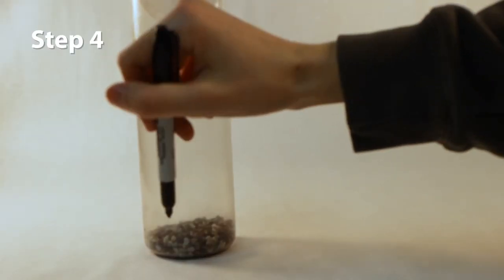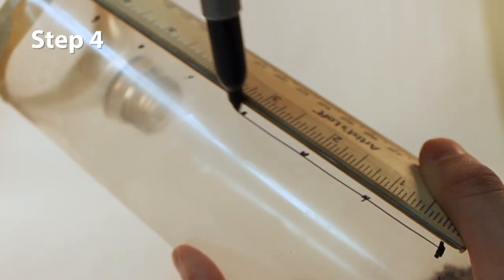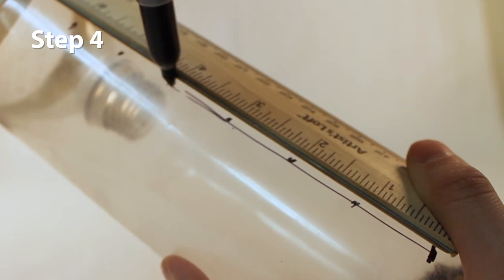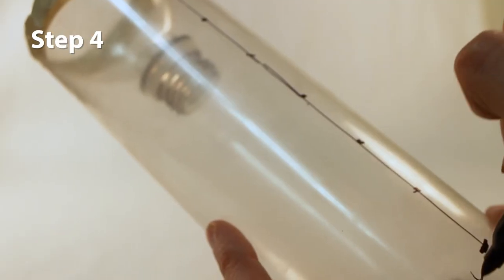Step 4: Draw a zero line using a marker and ruler and mark each inch or quarter inch above that line along your container. This will create a way to take measurements of the rainfall.